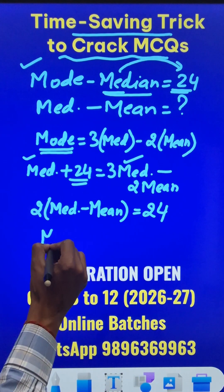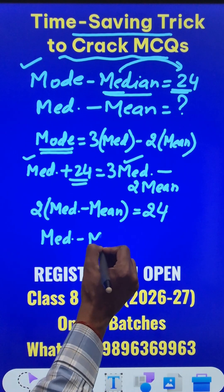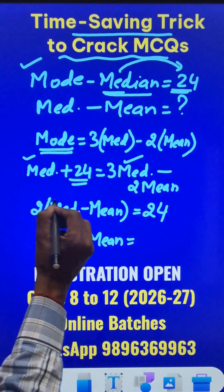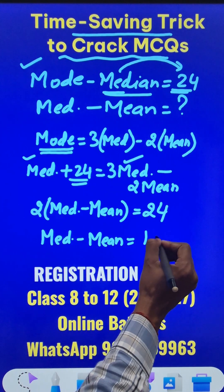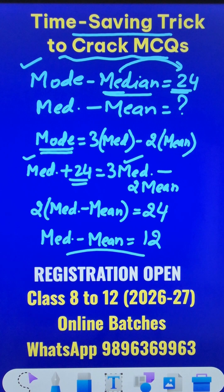So what is the answer? The difference between the median and mean will be 24 divided by 2, which is 12. Isn't that an amazing short trick?